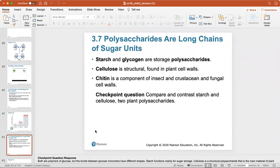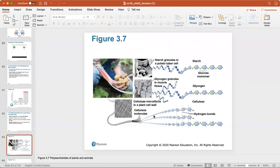Starch and glycogen are storage polysaccharides, meaning they store sugar as energy to be used later. Cellulose is structural found in plant cell walls. Chitin is a component of insect and crustacean and fungal cell walls. We can compare and contrast starch and cellulose to plant polysaccharides.